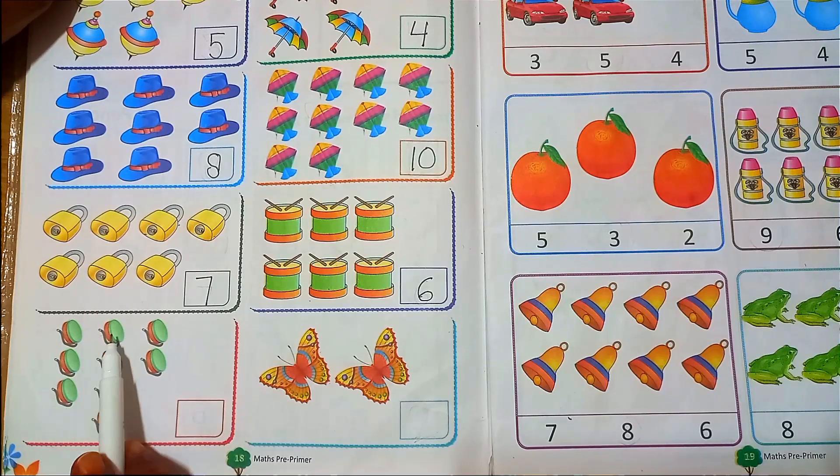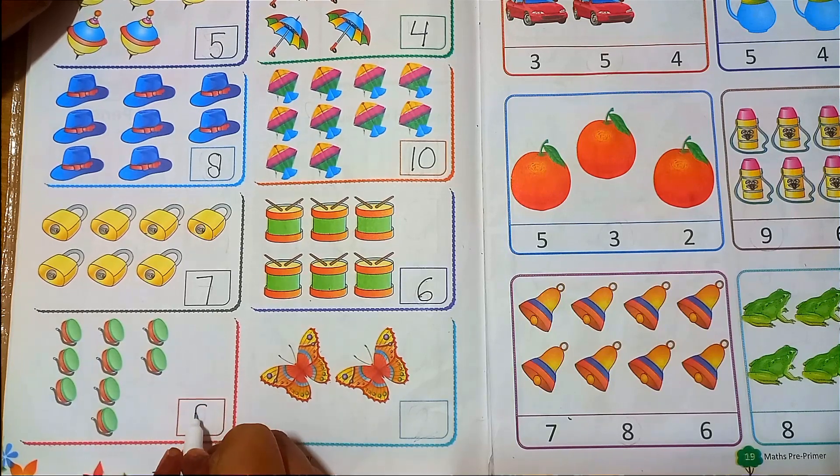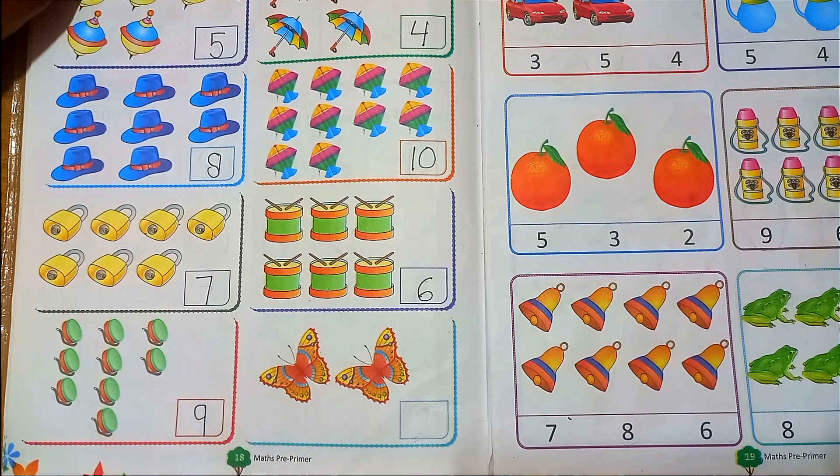Next is one, two, three, four, five, six, seven, eight, nine. Nine yu-yus.